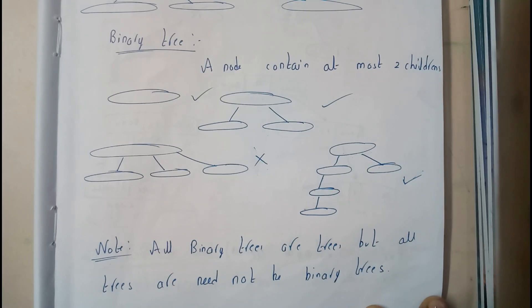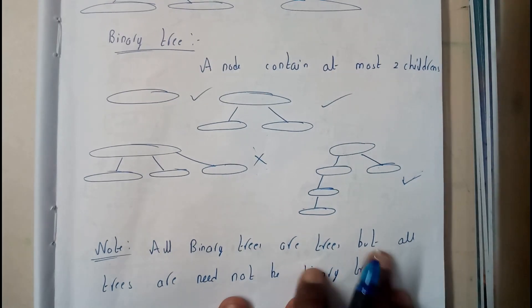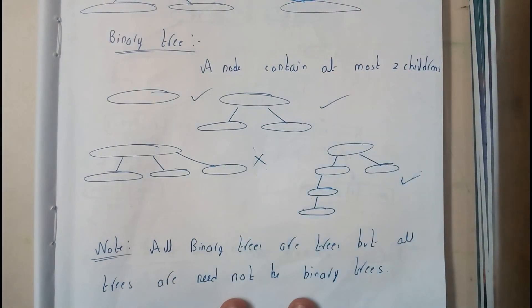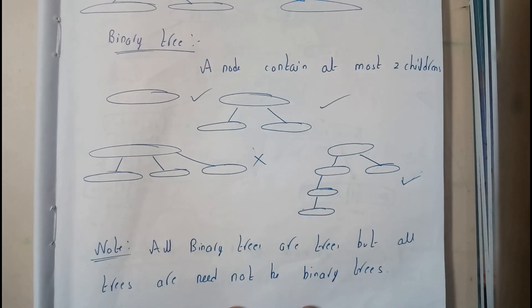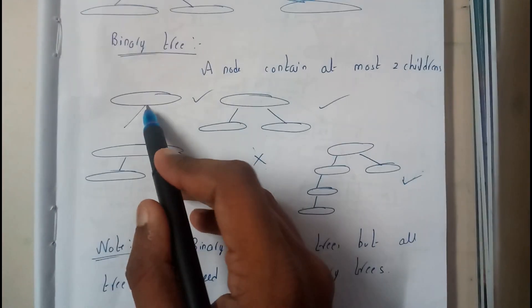A node containing at most two children. At most two children will be the binary tree. So it has a maximum number of children. Basically, it should not exceed two. So even it may have zero children. Here we are not having any children. This is the only parent node.